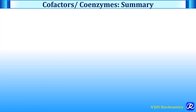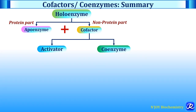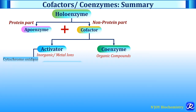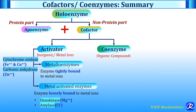Now let's summarize today's topic on cofactors and coenzymes. The functional enzyme is holoenzyme, made up of apoenzyme (the protein part) plus cofactor (the non-protein part). Cofactor can be an activator if it is inorganic or a metal ion, or a coenzyme if it is organic. If the metal ion is tightly bound to the enzyme, it is a metalloenzyme; if loosely bound, it is a metal-activated enzyme. Examples of metalloenzymes are cytochrome oxidase and carbonic anhydrase; metal-activated enzymes include hexokinase and amylase.